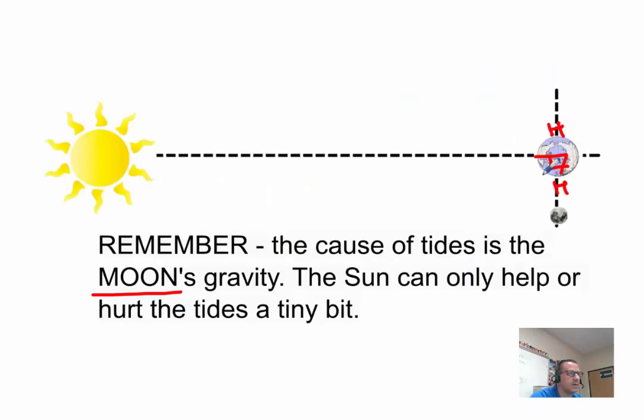High tides are here and here. And low tides are here and here. So think about these high tides. Is the sun helping the moon now? Or are they working in opposite directions?